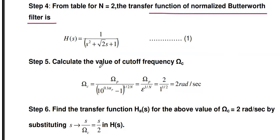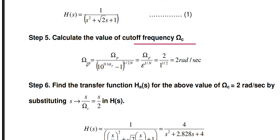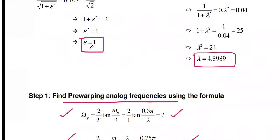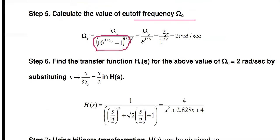The next step is to find the cutoff frequency using the formula: ωc = ωp / (10^(0.1αp) − 1)^(1/2n) = ωp / ε^(1/n). Since ε = 1 and ωp = 2 rad/s, we get ωc = 2 / 1^(1/2) = 2 radians per second. Cutoff frequency ωc = 2 rad/s is calculated.